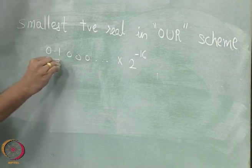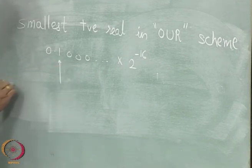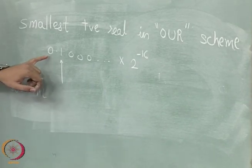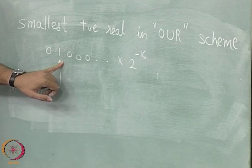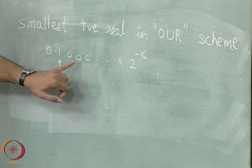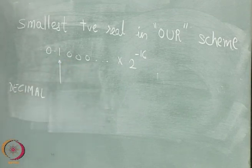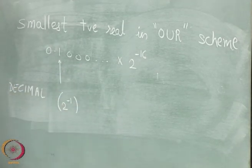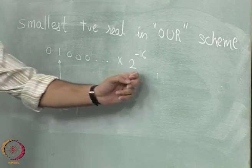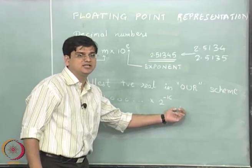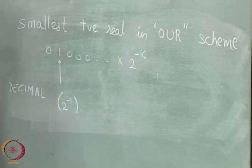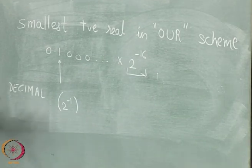When we represent the mantissa as 0.1 in binary, the decimal equivalent is 2 to the power minus 1. The next bit would be 2 to the power minus 2 and so on. So the decimal equivalent is 2 to the power minus 1 — that is what the mantissa gives us — multiplied by 2 to the power minus 16, which is what the exponent gives us. Therefore, the smallest positive real number is going to be determined through the exponent part of the representation.